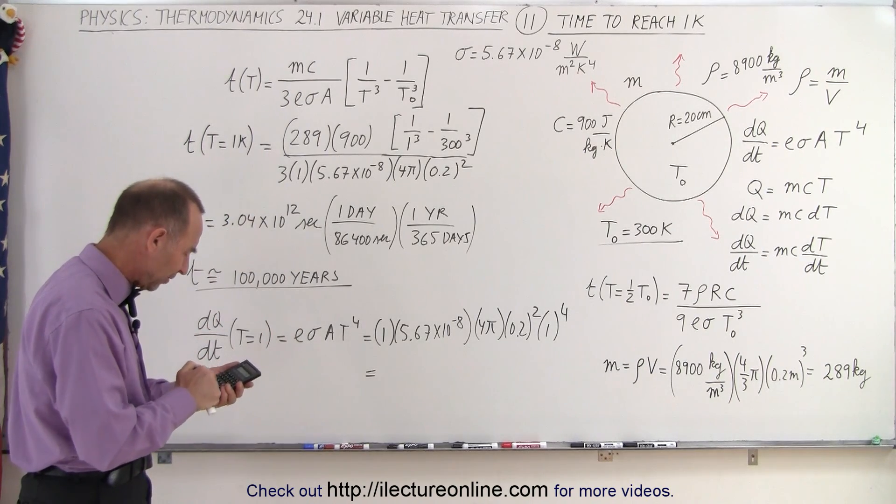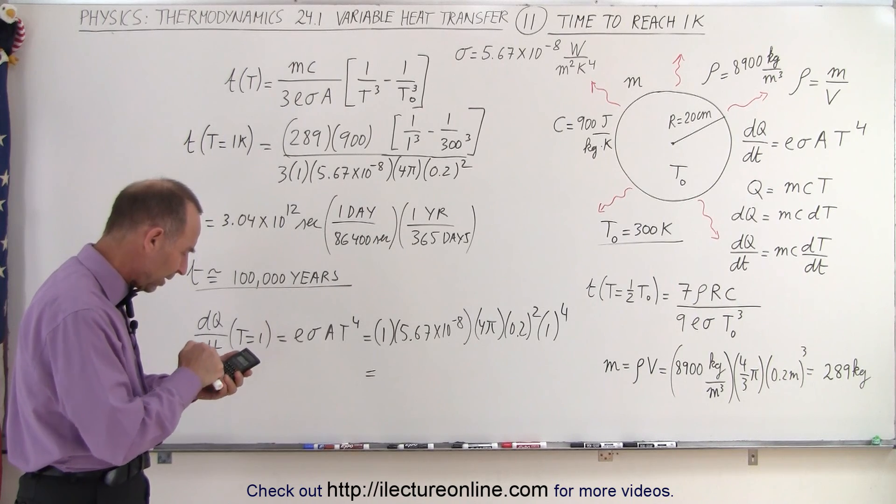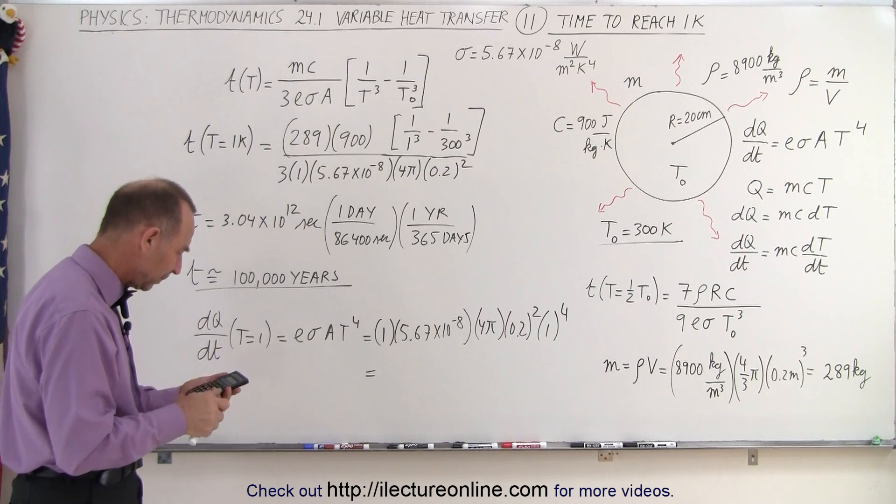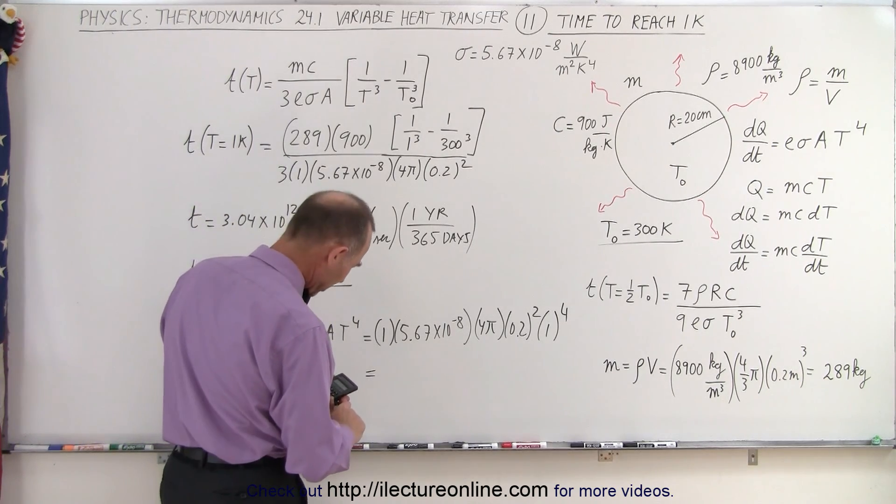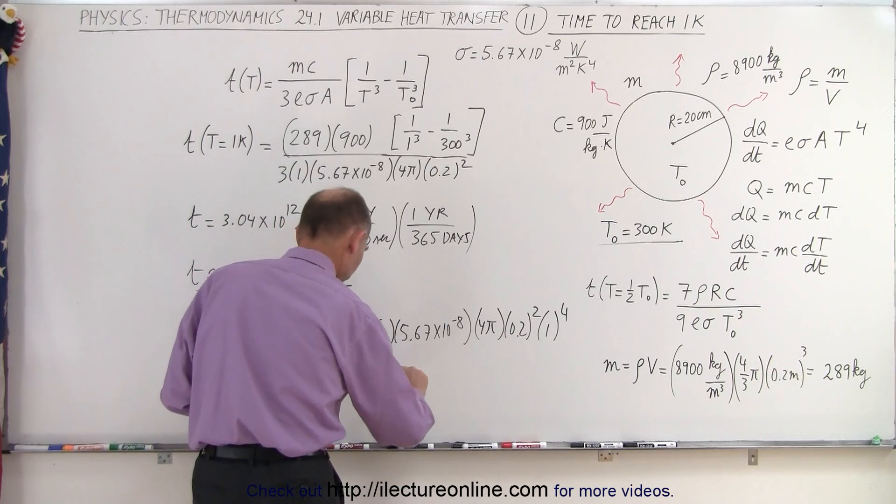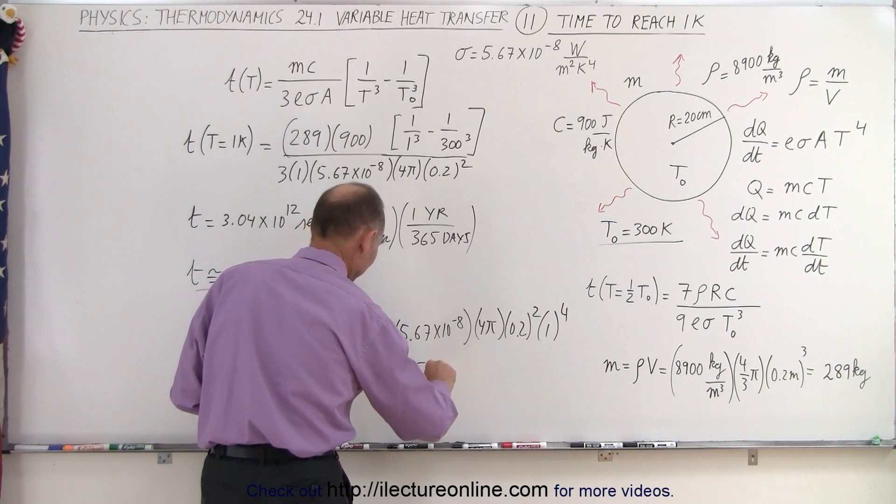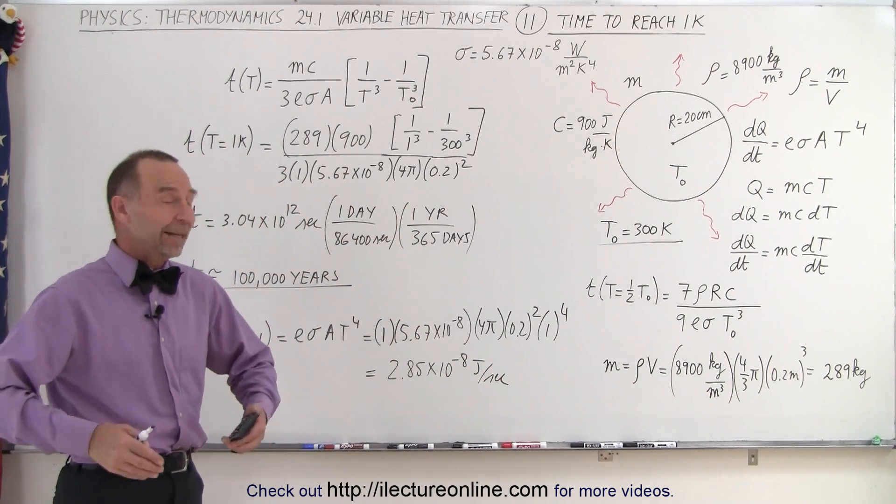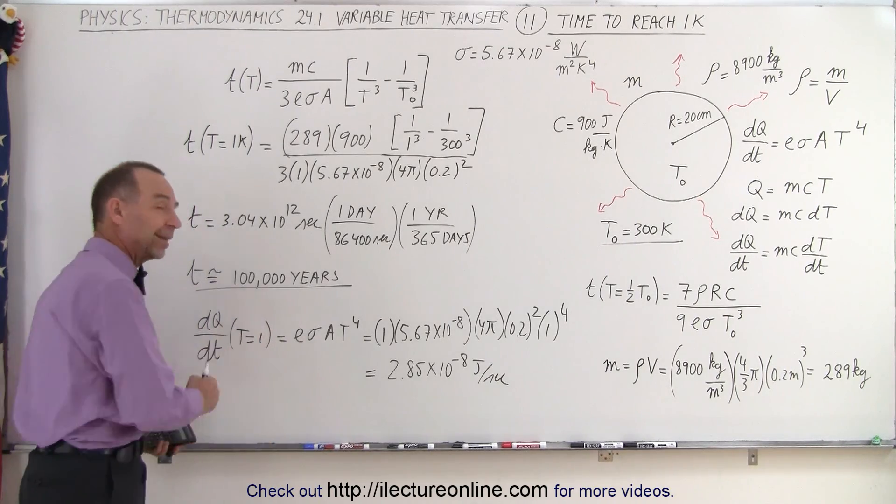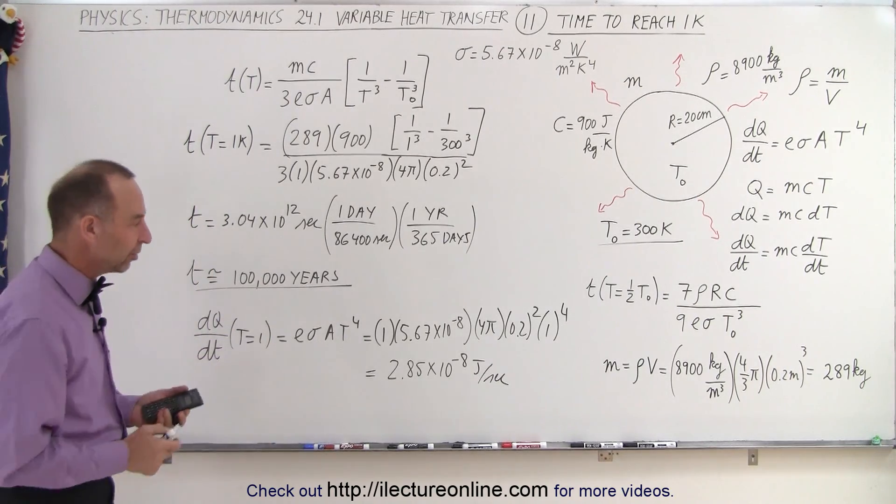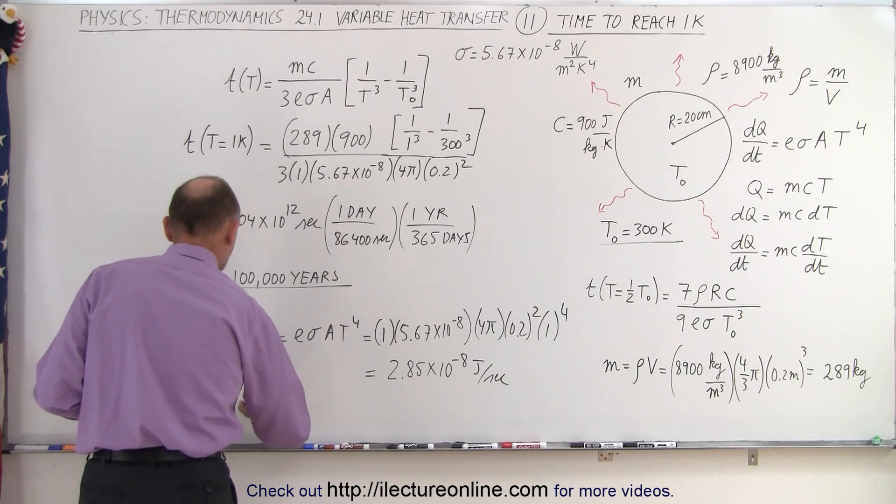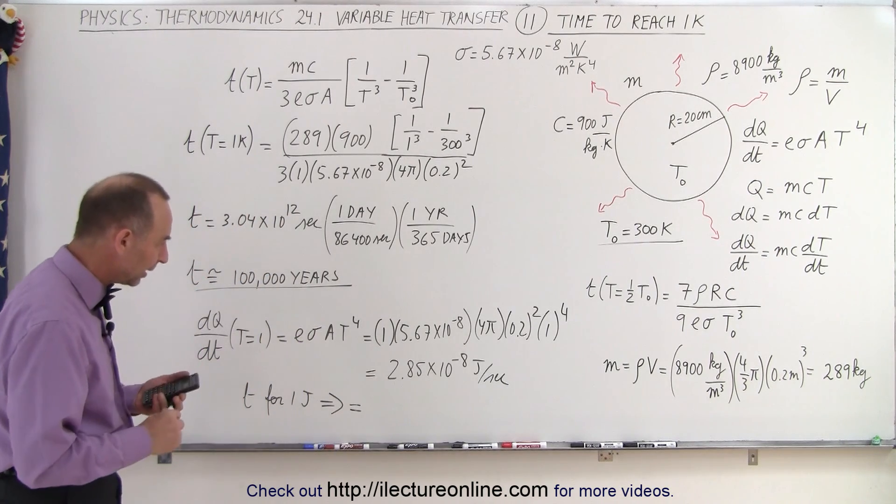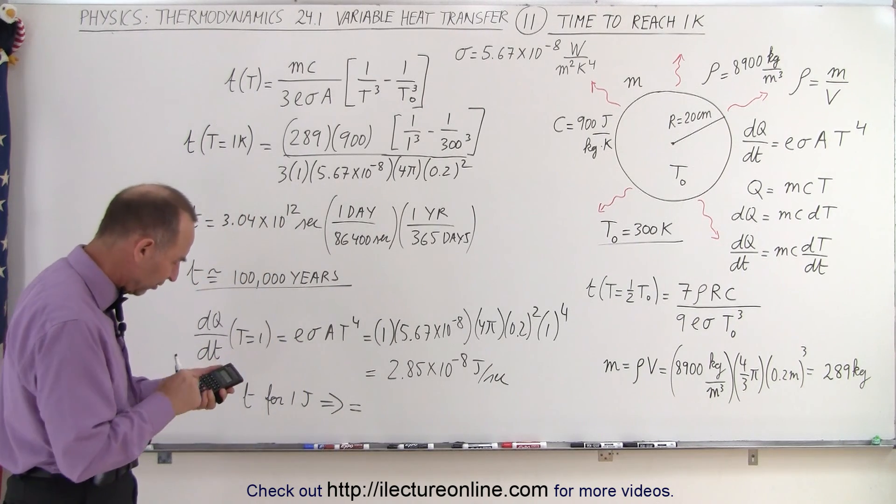5.67e to the minus eight times 4 times pi times 0.2 squared equals 2.85 times 10 to the minus 8, so 2.85 times 10 to the minus 8 joules per second. How long would it take to radiate out a single joule by the time the temperature is down to one kelvin, assuming the surroundings is at zero? So the time for one joule—how do we calculate that? We simply take the inverse of that.